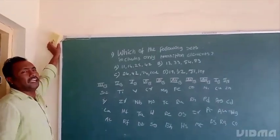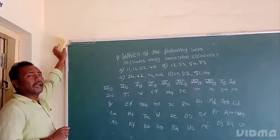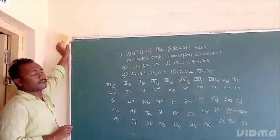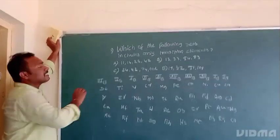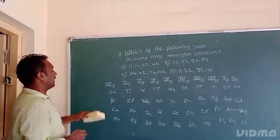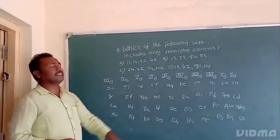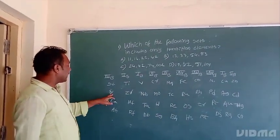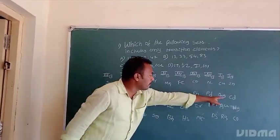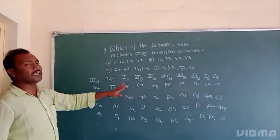D-block elements, we have 4 series. This is the 3D series elements. Scandium to Zinc are 3D series elements. Yttrium to Cadmium are 4D series elements.